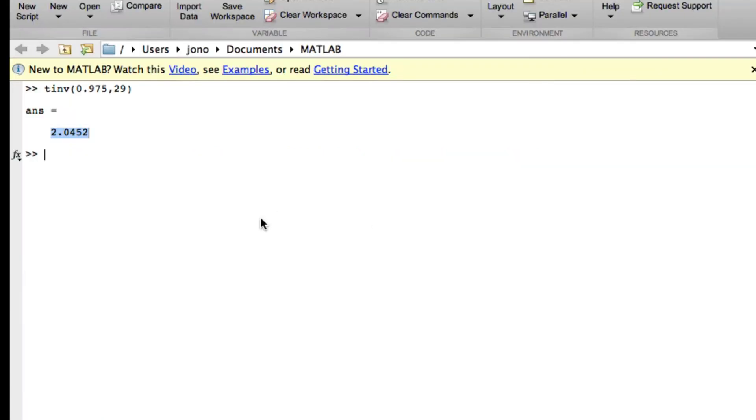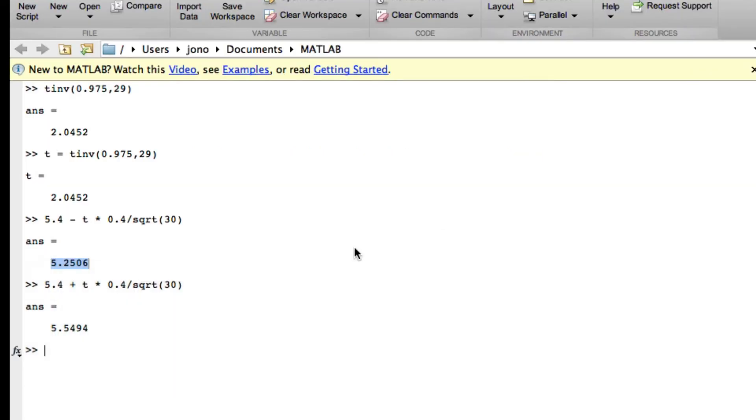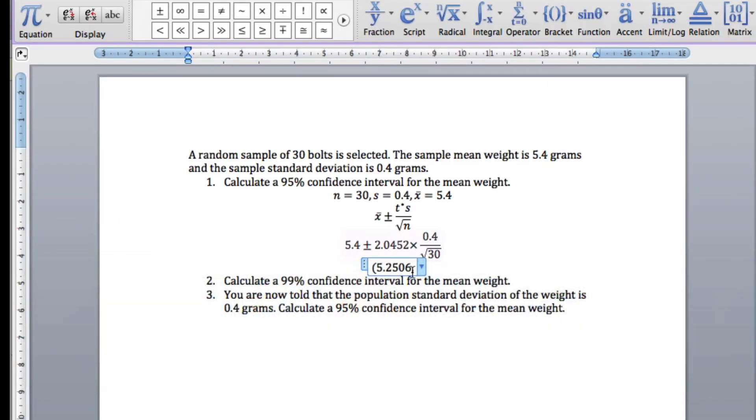So, let's put that into MATLAB. So we've got 5.4, we'll do the minus sign first. We've got our t-inverse. Let's make it easy for myself. Let's call this t. So, I've got 5.4 minus t times 0.4 divided by square root of 30. We get 5.2506. The right-hand one would be the plus version. We get 5.5494. So, to give the answer I've put it in brackets. I've put the lower value on the left. And so, we've now got our confidence interval.